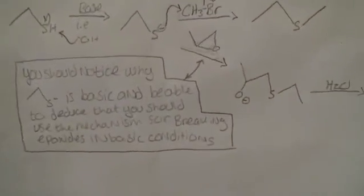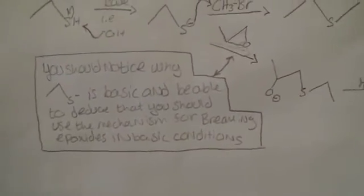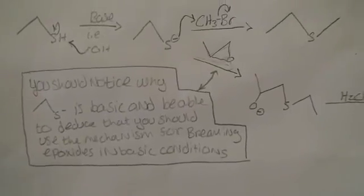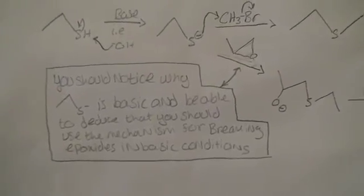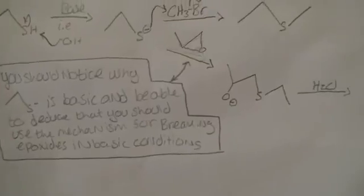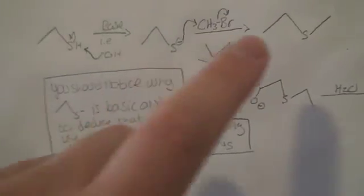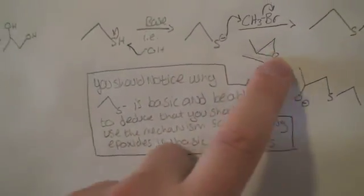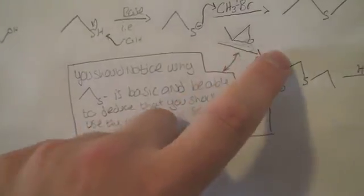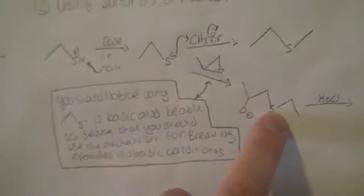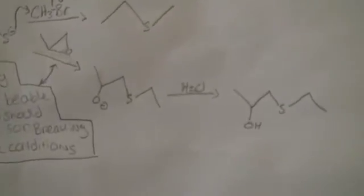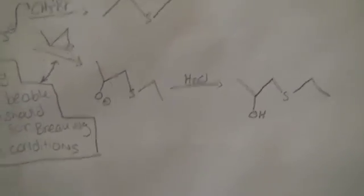So when you add it here, it's going to be something that's adding under basic conditions, which means that it's going to attack the least hindered carbon. So it attacks up here. The oxygen pops down. Then you get your sulfur and your two carbons. Then you add some water to protonate the oxygen. And that's it for alcohols, ethers, epoxides, and thiols.